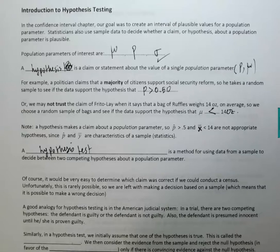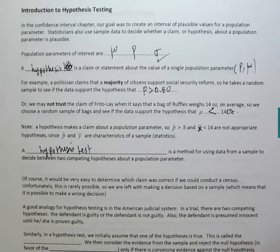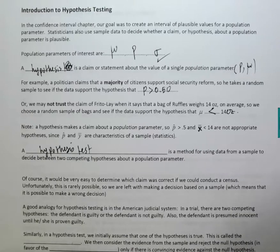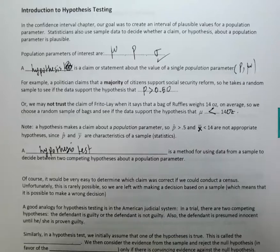A good example of a hypothesis test is the American judicial system. When a person is being tried for a crime, two assumptions are made: the defendant is not guilty, and the defendant is guilty. The prosecutor works to prove guilt, while the defense attorney tries to prove innocence. However, the court must assume the defendant is not guilty to begin with — otherwise there would be no need for a trial. Similarly in hypothesis testing, there are two hypotheses and we assume the first one is true until proven otherwise.